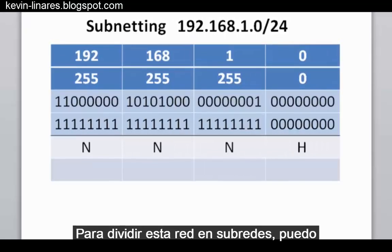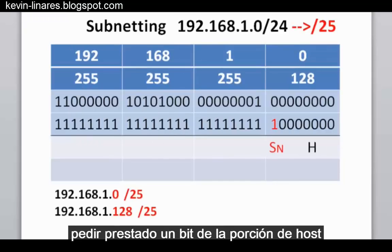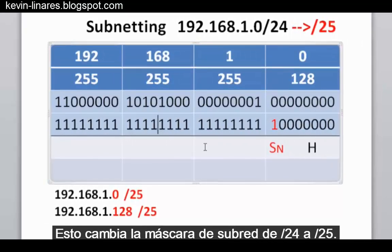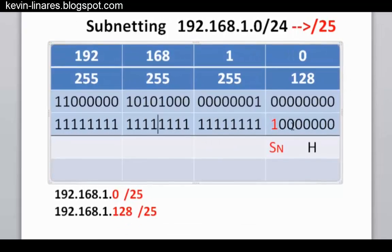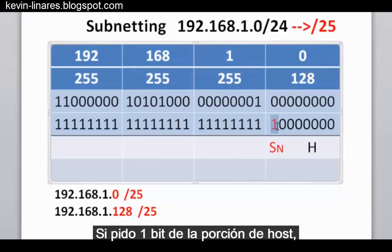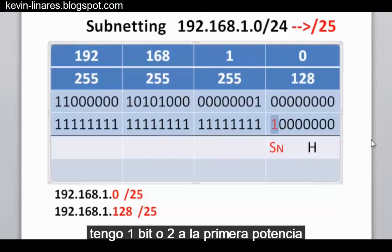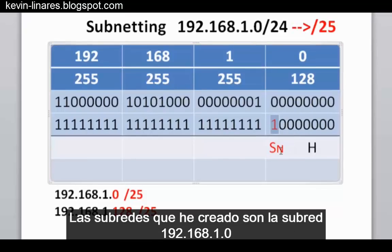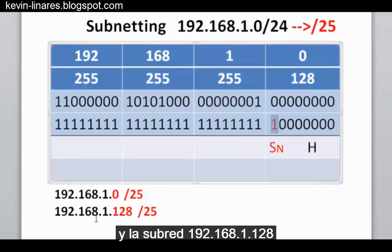To subnet this network, we can borrow one bit from the host portion of the subnet mask, giving us one subnet bit. This changes the subnet mask from slash 24 to slash 25. Borrowing one bit means two to the first power, making two possible subnetworks: the 192.168.1.0 subnet and the 192.168.1.128 subnet, both slash 25.